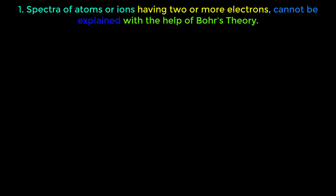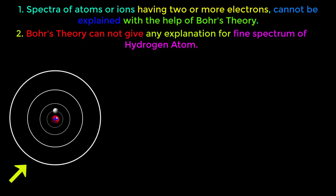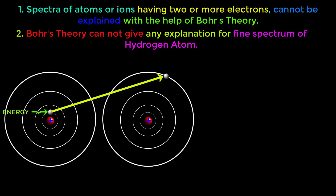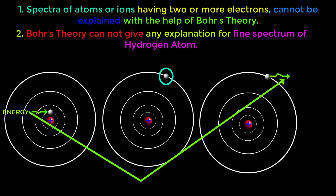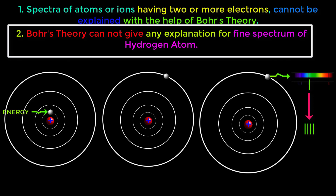The second limitation of Bohr's theory is that it cannot give any explanation for the fine spectrum of hydrogen atom. When a hydrogen atom gets energy from an outside source, its electron jumps to a higher orbit. When the electron releases that excess energy as radiation and returns back, we get a spectral line. But when a high-power spectrometer examines this spectral line, we see that it is not a single line — there are more lines in it. Thus Bohr's theory cannot explain the fine spectrum of hydrogen atom.